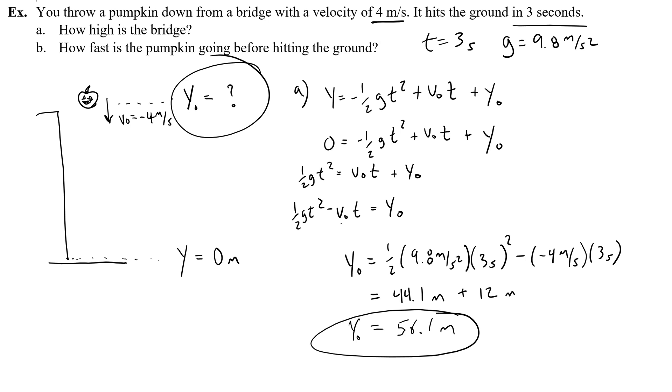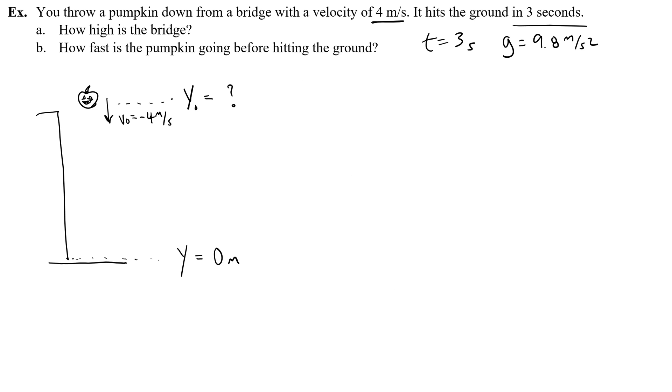Now let's work on part b. How fast is the pumpkin going before hitting the ground? So I've cleared some space for part b, and here I'm going to draw the pumpkin right at the ground. Remember it's right before it hits the ground, so it hasn't actually hit the ground yet. There's going to be some final velocity that's much bigger, and we're trying to figure out what is that velocity when you've gotten to a height of zero.